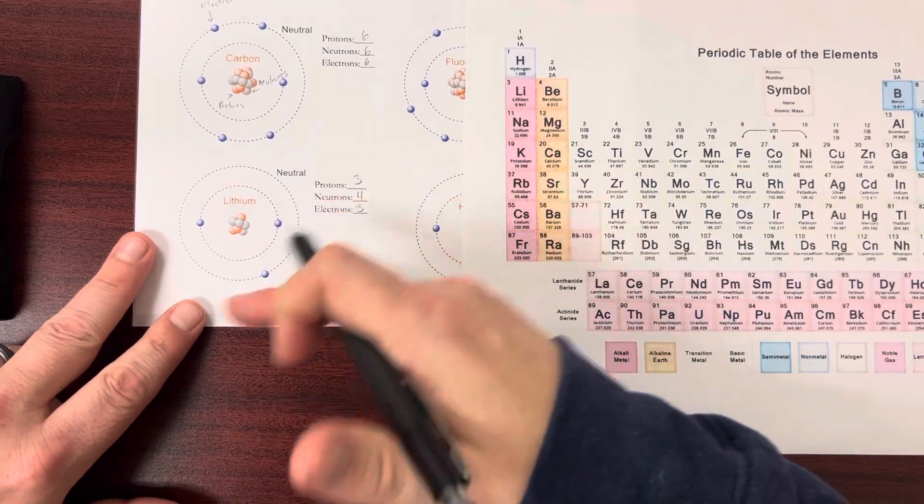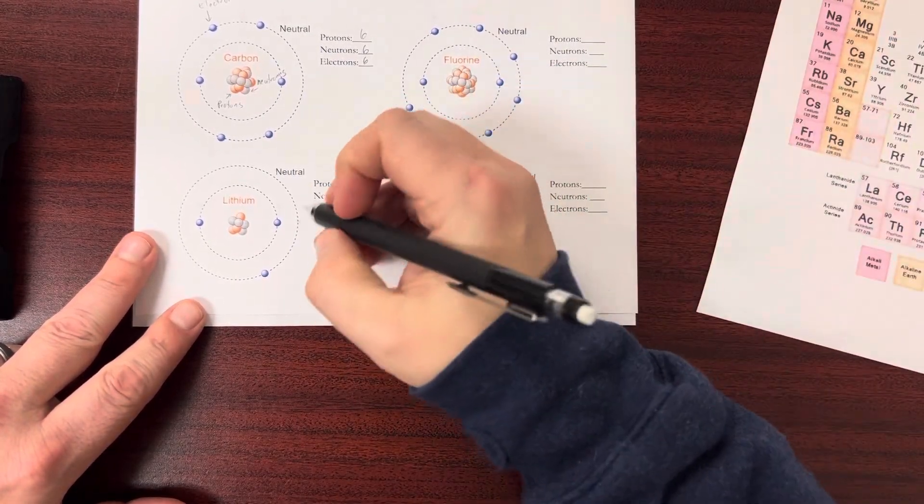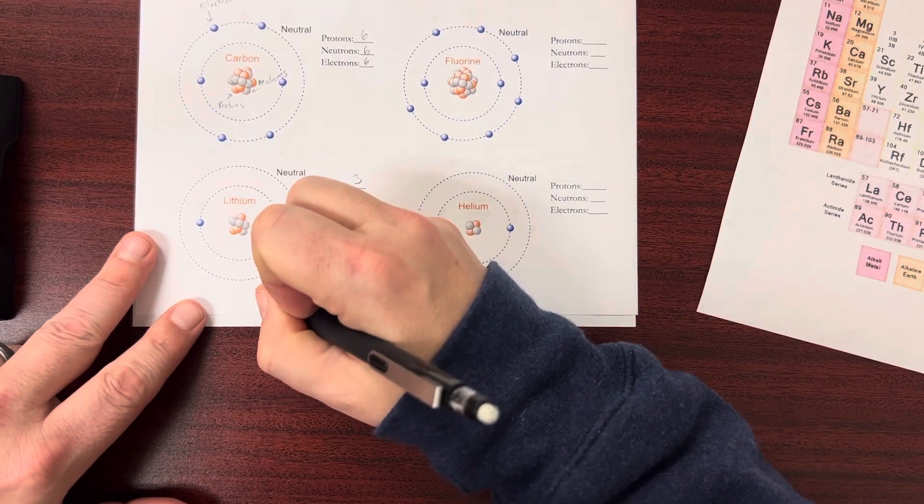Either method is fine. Literally just counting them on the page is fine, or using periodic table. Don't forget to label each of the pictures, though.